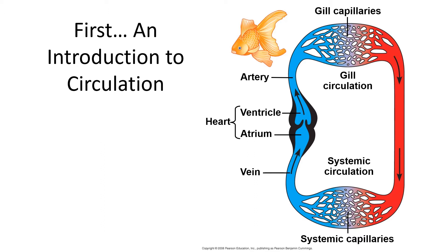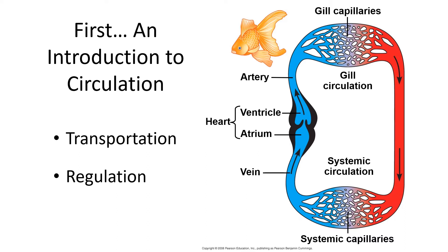It doesn't matter what type of organism we're talking about — circulation plays the same critical roles. We have transportation of oxygen from the gills or lungs to the tissues, transportation of waste products and carbon dioxide. We have regulation: hormones and signaling molecules mixed in with the blood bring about changes and help maintain homeostasis. And we also have protection — cells and compounds within our blood help protect us from foreign invaders, disease, and toxins.